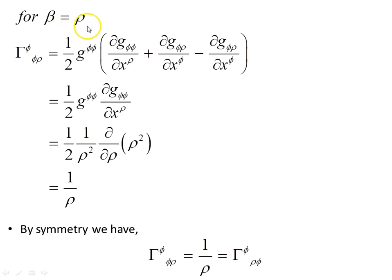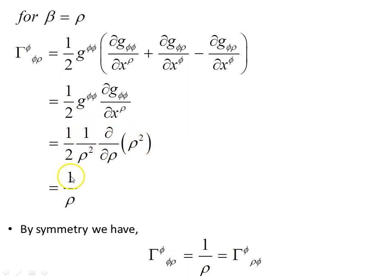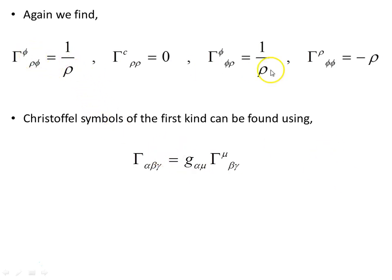Now trying beta equals rho: after cancellations we are left with (1/2) g^(phi phi) times d(g_(phi phi))/d(rho). With g^(phi phi) = 1/rho squared and g_(phi phi) = rho squared, differentiating rho squared with respect to rho gives 2 rho. The factor of 2 cancels with the 1/2, giving rho times (1/rho squared) = 1/rho. By symmetry, Gamma^phi_(phi rho) = Gamma^phi_(rho phi) = 1/rho. We have now determined all four non-zero Christoffel symbols for this coordinate system.